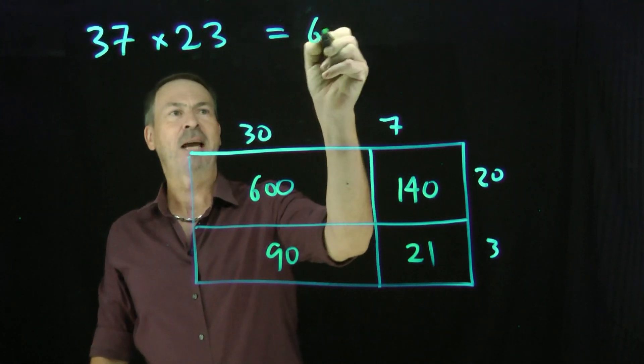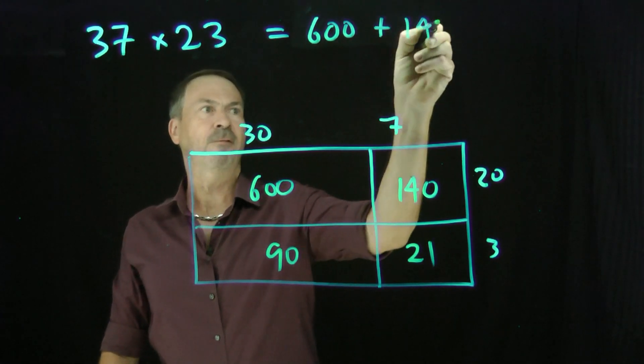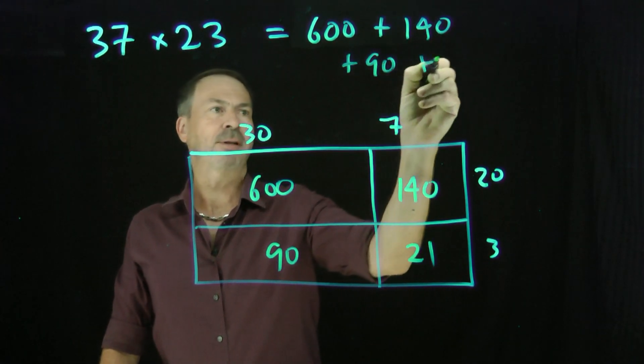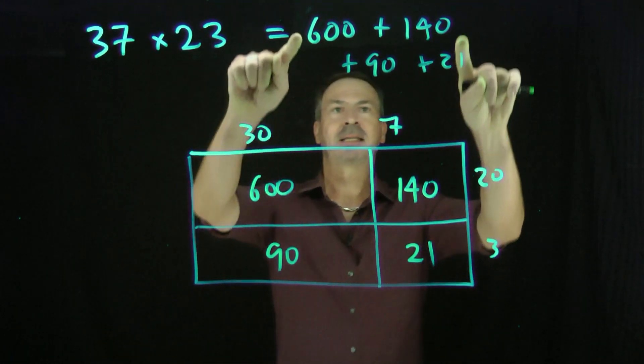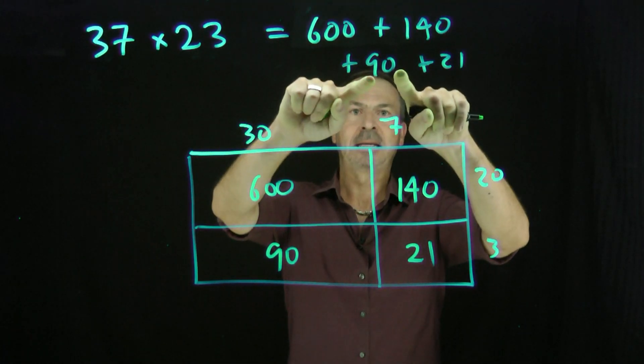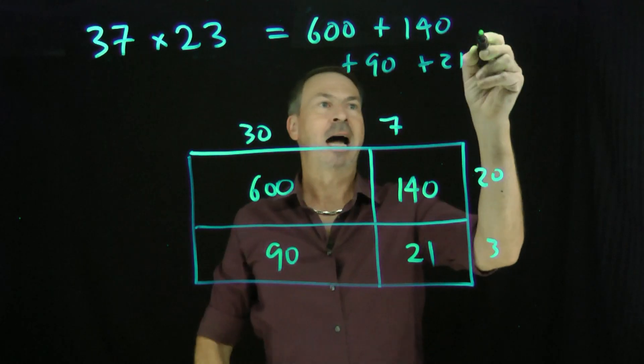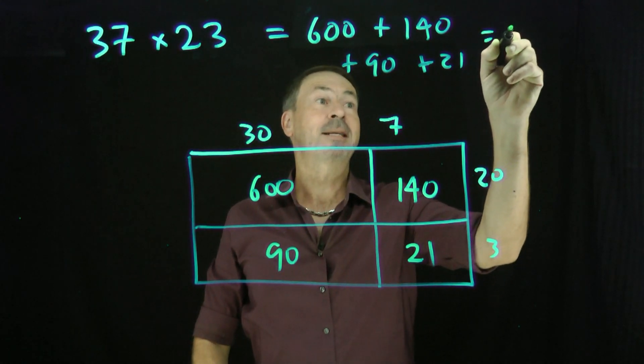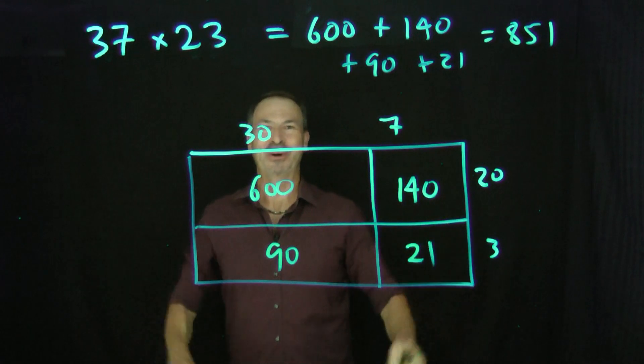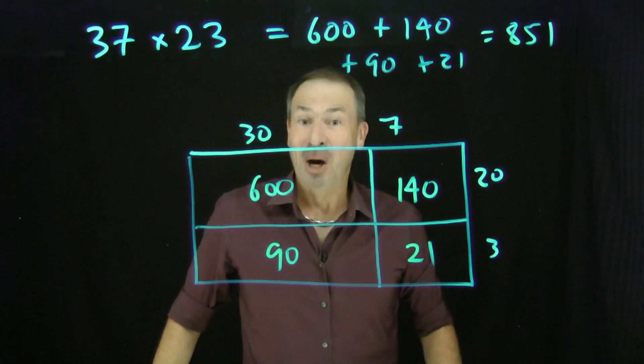So the answer to my multiplication problem is 600 plus 140 plus 90 plus 21. That's 740 plus 90. That's 830 plus 21 is 851. Yes, there it is. 851 again. Great. Good and golden.